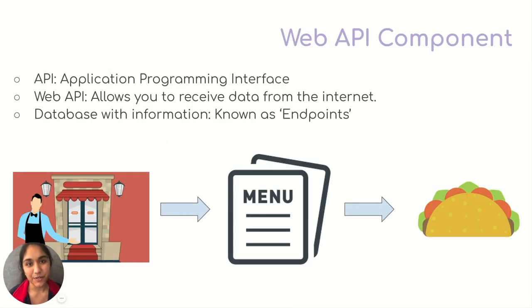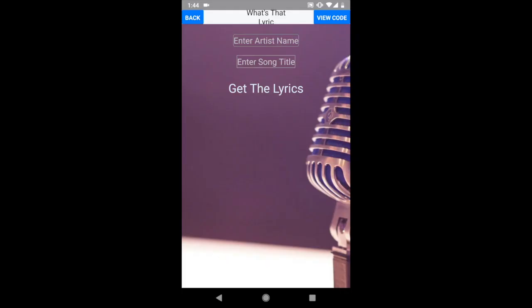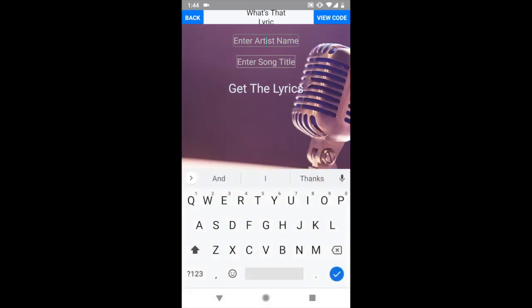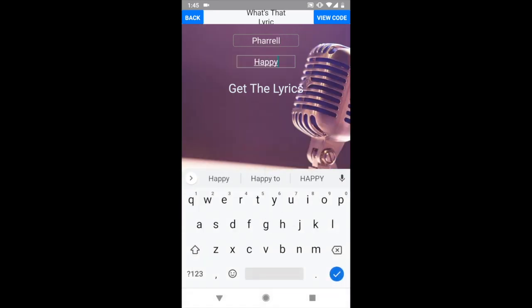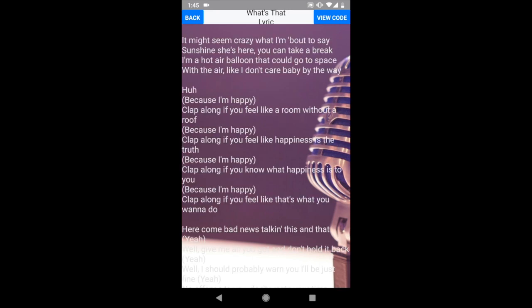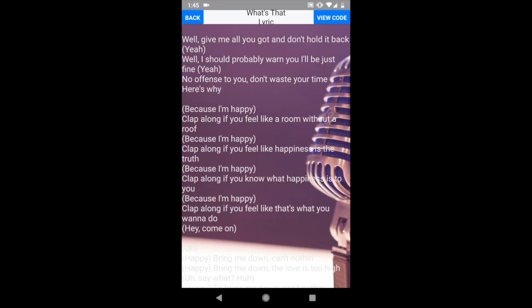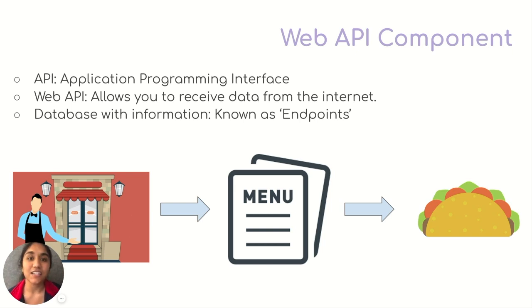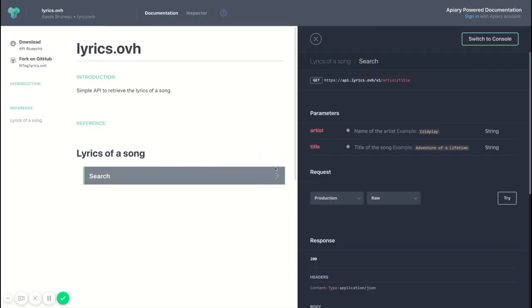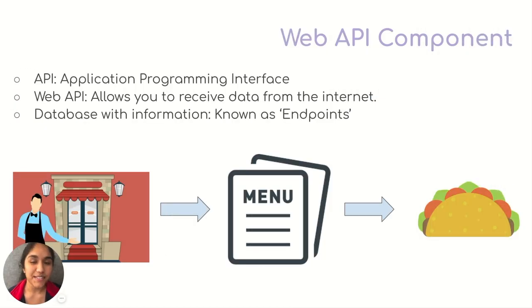In this tutorial we'll be creating an app that takes the artist's name and a song title, and gives you the lyrics of that song right away. The app asks you to enter an artist's name and a song title — let's do Pharrell and the song Happy — then click 'Get the Lyrics' and you get the lyrics right away. All we did in that demo was connect the lyrics.ovh database to this app. Lyrics.ovh is a data source that stores song lyrics for hundreds of songs, and this is pretty simple to set up.